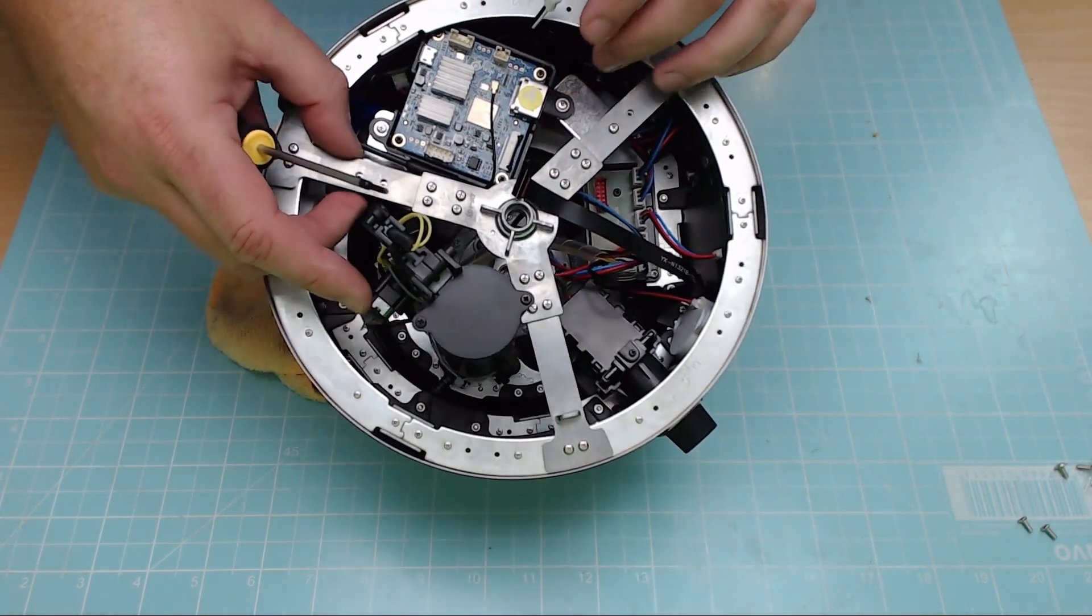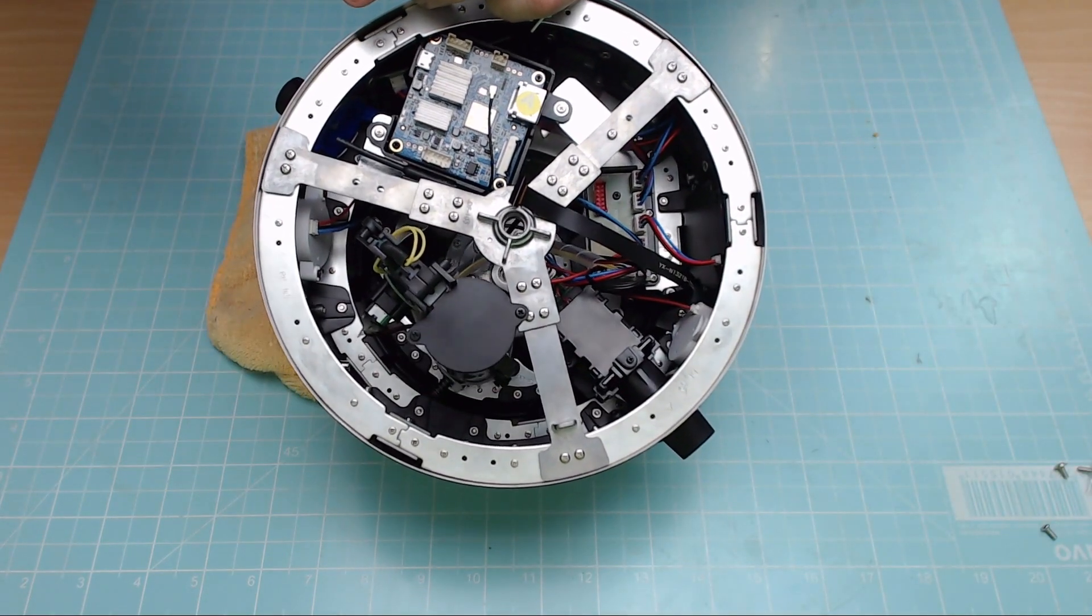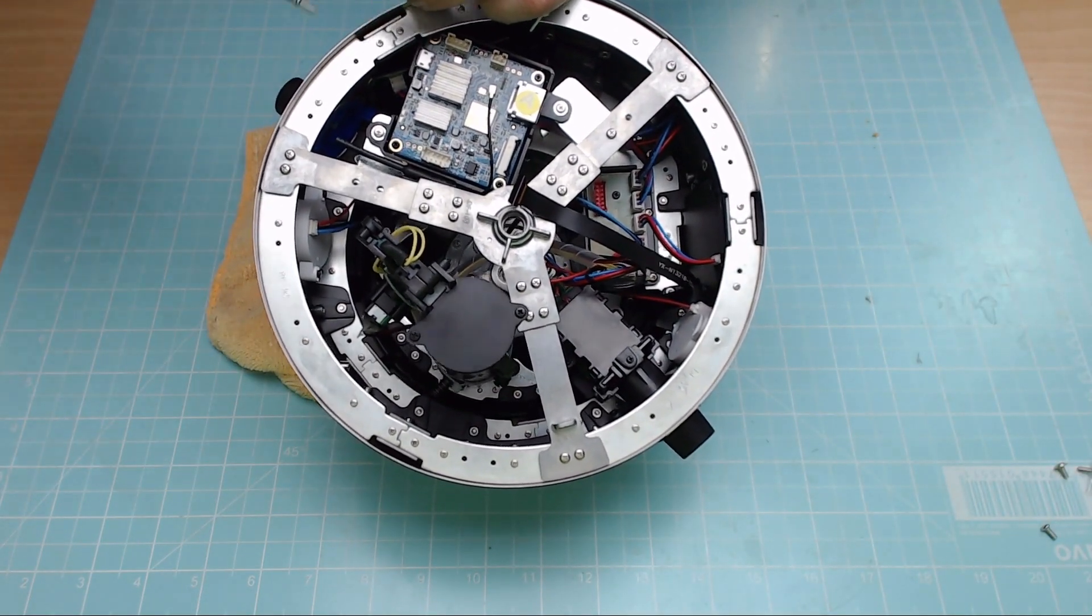So we see the microphone wires off there. So make sure that the next one's lined up. Get another screw. And we'll screw it in this side as well.